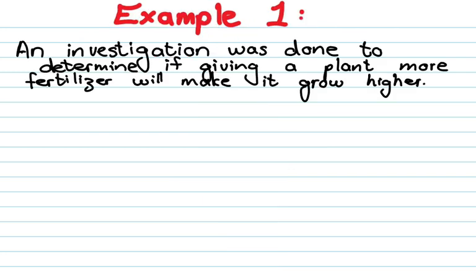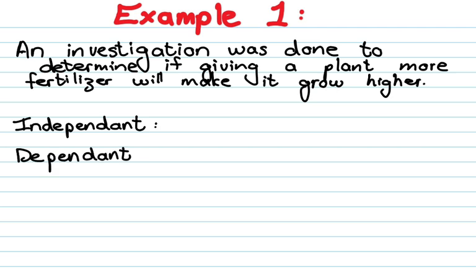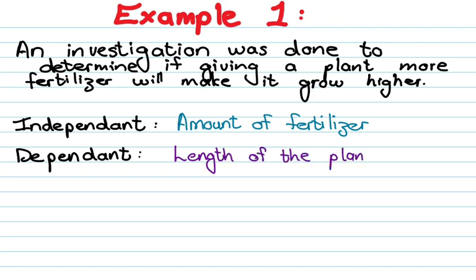In example number one, we are given the following information: an investigation was done to determine if giving a plant more fertilizer will make it grow higher. You have to look at this sentence and figure out which one you controlled as the investigator. You can control the amount of fertilizer, but you cannot control how high the plant grows. So the amount of fertilizer is the independent variable, and you measure how high the plant grows — that is the dependent variable.